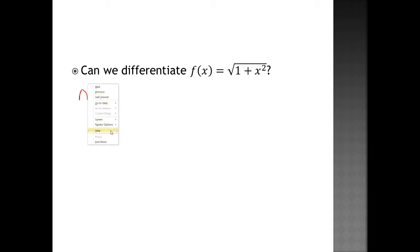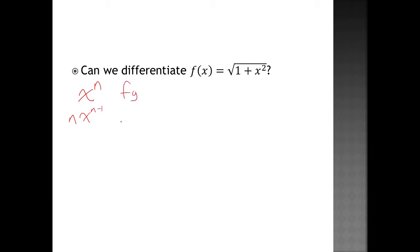To recap what we talked about earlier in this chapter: we talked about the power rule, which states that if I had x to the power of n, the derivative would just be n times x to the power of n minus 1. Then we talked about the product rule, where if you had two functions multiplied together, the derivative would be f·g prime plus g·f prime. And then we had the quotient rule: if two functions were divided by each other, the derivative would be g·f prime minus f·g prime, all divided by g squared. And then we have various trig derivative rules also, which were in the previous video.